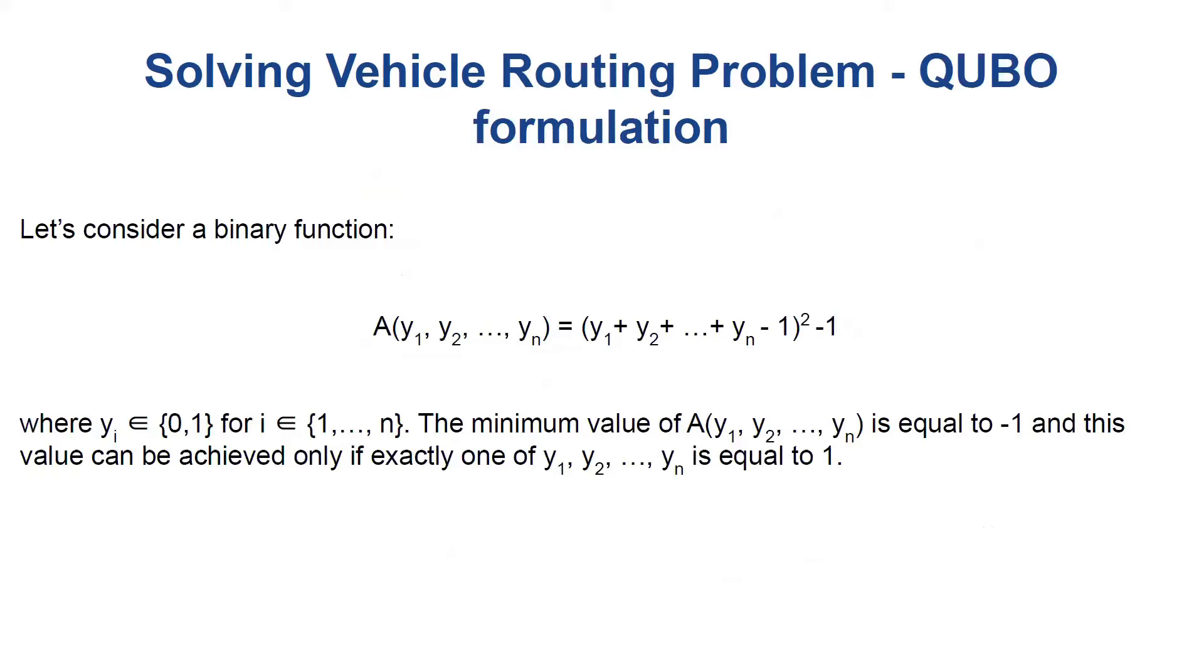Just one more notation before we proceed. Let's consider the following binary function. The values of all M variables are from the set {0,1}. The minimum value of function A is equal to minus 1, and this value can be achieved only if exactly one of the variables is equal to 1.